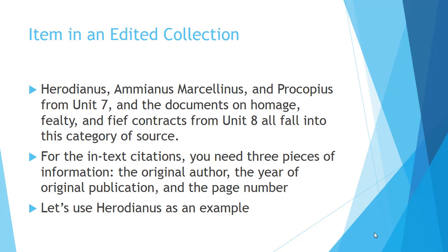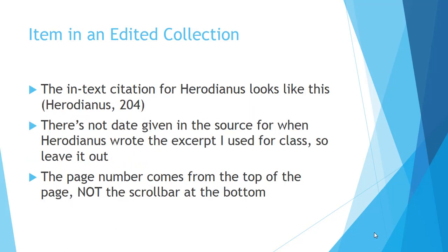Getting back to the PowerPoint. For the in-text citations, you need three pieces of information: the original author, the year of the original publication, and the page number. I don't need the author of the collection — I need the original person who wrote the work. So let's use Herodianus as an example. The in-text citation for Herodianus will look like this: parentheses, Herodianus, comma, 2004, end parentheses. There's no date given in this source, therefore you can leave it out. If the source does not include a date when it was originally created, you don't have to put it in your in-text citations or works cited list.